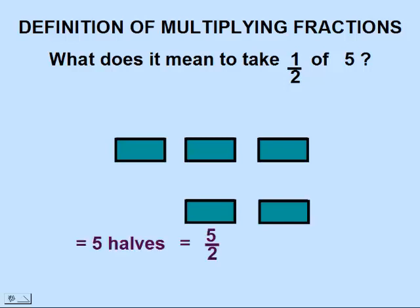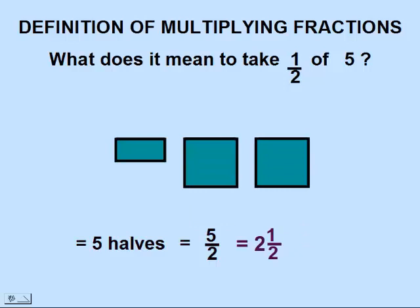Five halves we could write as five over two. If we put two of the halves together again we get two whole ones and one half. So this would be a mixed number. Five over two we call an improper fraction because the top number is bigger than the bottom number.